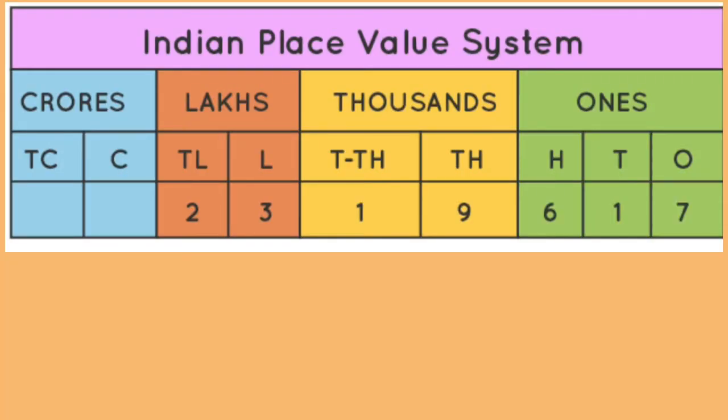In Indian place value system we start with ones, then tens, hundreds, thousand, ten thousand, lakh, ten lakh, crore, ten crore.